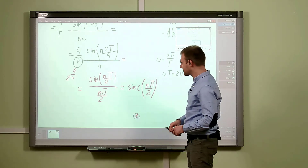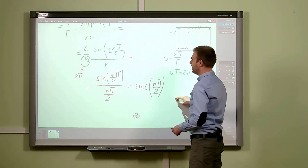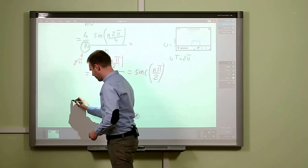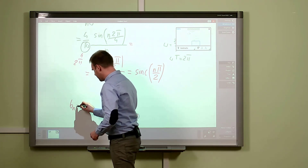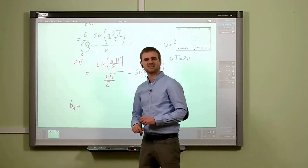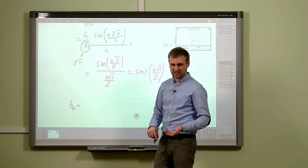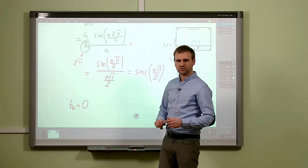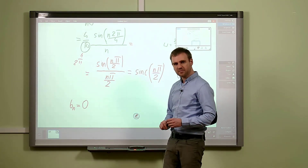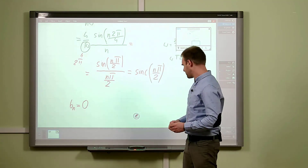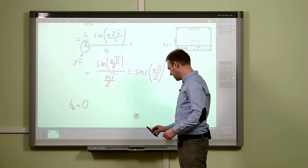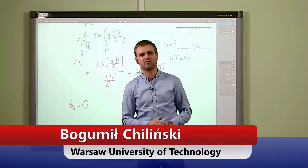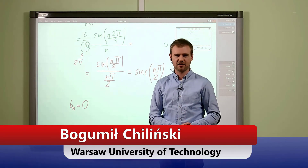The next step will be an exercise for you: bn, due to the symmetry of our function — which means our function is even — must equal zero. Try to perform the same integration steps and you will see that this is true. That is everything regarding the topic of harmonic analysis. Thank you. Bye.